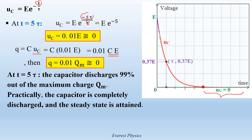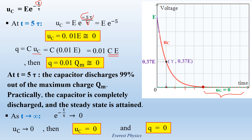Looking at the graph, here we have the steady state. As time tends to infinity, e^(-t/tau) tends to 0, which means UC tends to 0. We conclude that as T tends to infinity, UC equals 0, and therefore Q equals 0.